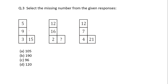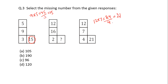Select the missing number from the given responses. First we have to identify the hidden pattern in these boxes. You can notice that 9 × 5 = 45, and 45 ÷ 3 = 15 — that is the number shown. Similarly, 12 × 7 = 84, and 84 ÷ 4 = 21 — that is this number. So the same pattern is followed: 12 × 16 ÷ 2 = 96. Wait — 12 × 8 = 96, so the correct answer is option C.